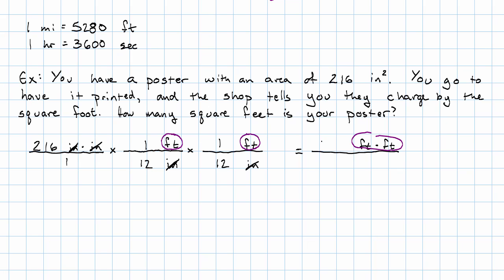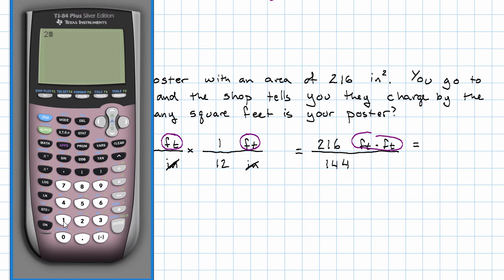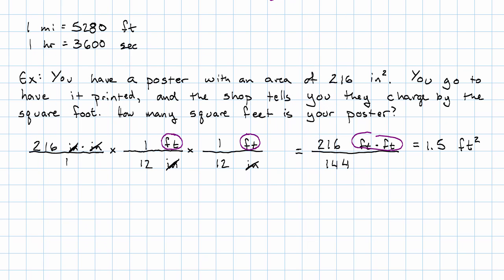Work out the multiplication and the numerator. We have 216 square feet. In the denominator, we have just the number 144. Doing that division, we'll have 216 divided by 144, that's 1.5 square feet. Great.